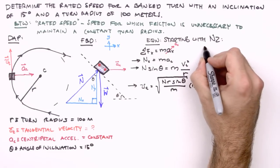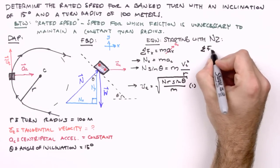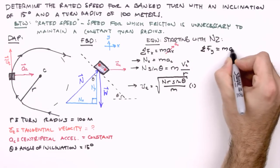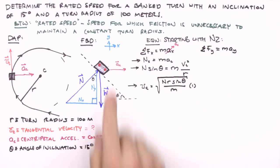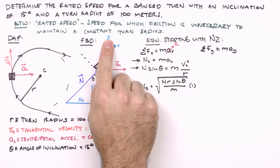So we have the sum of the forces in the y-direction equal the product of the vehicle's mass and its acceleration in the y-direction. Now, how might acceleration in the y-direction occur in a vehicle rounding a banked turn?